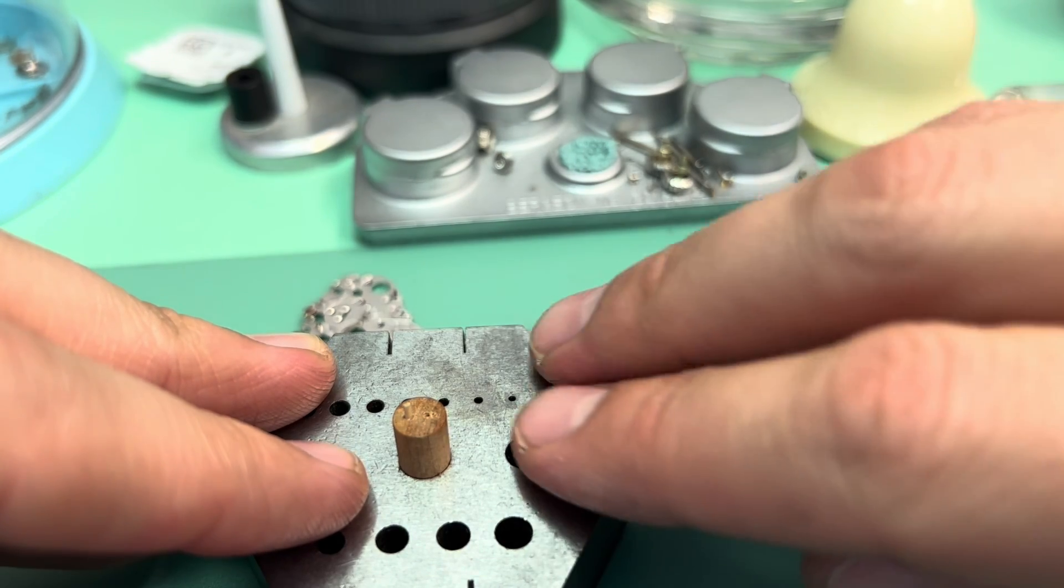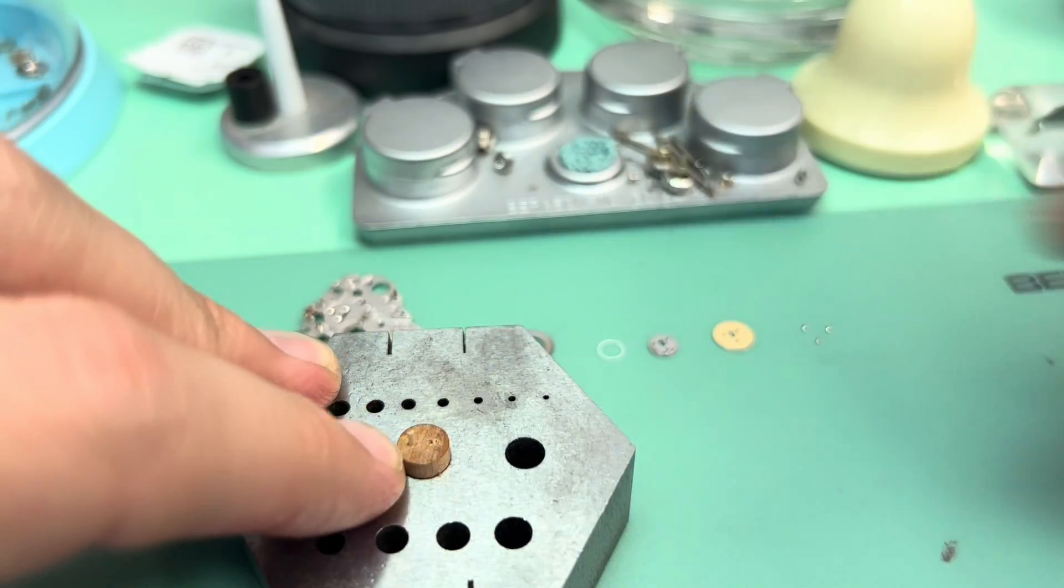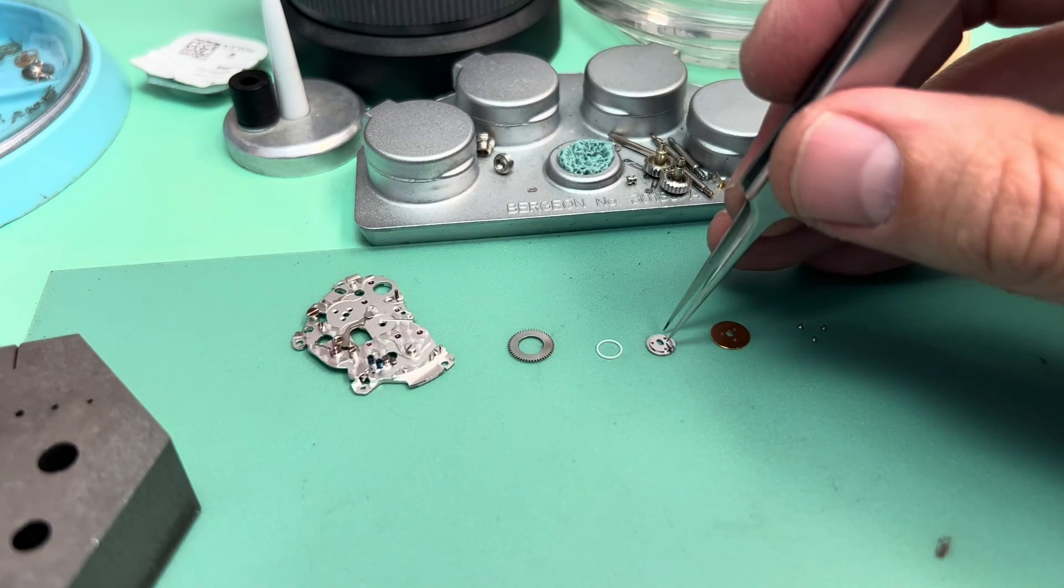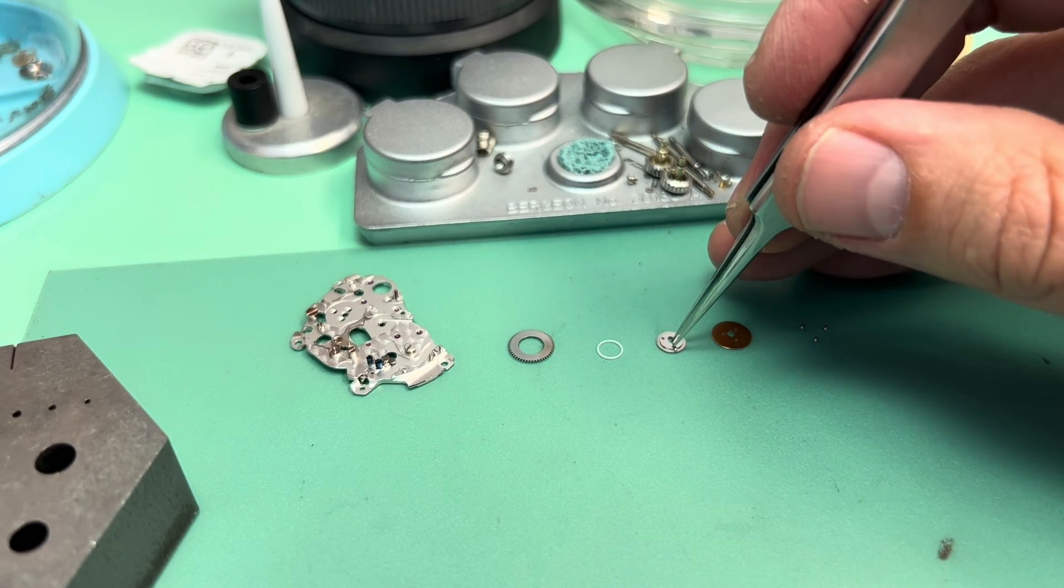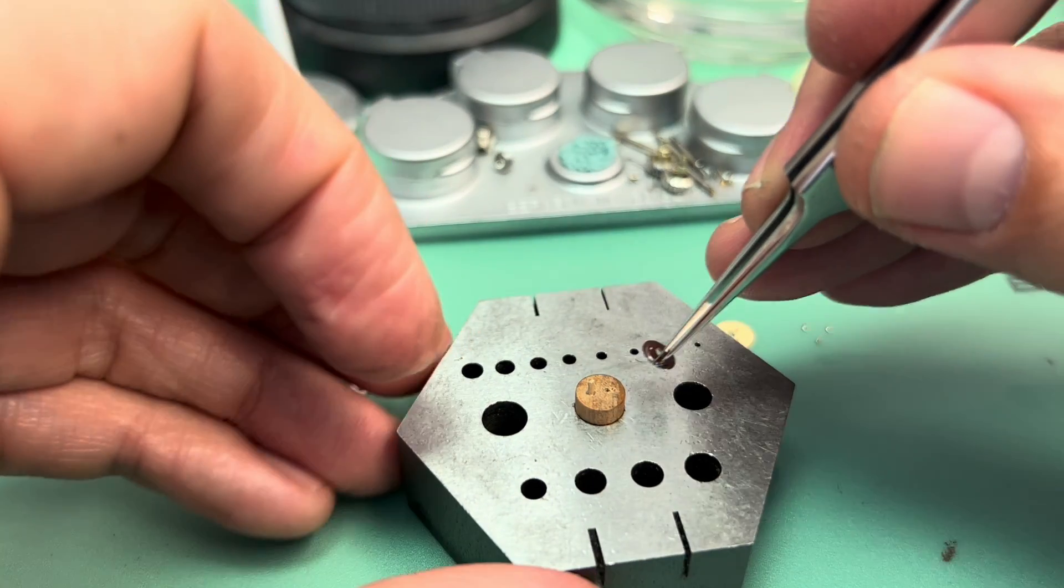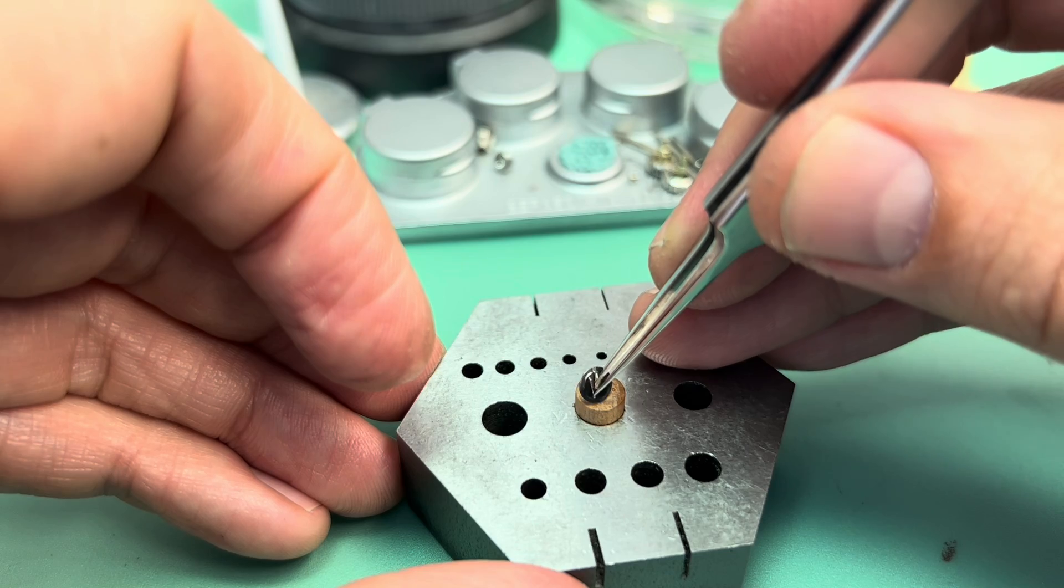This little dowel piece of wood I made. Put it right in my bench block. And you can just see how I do it right now.